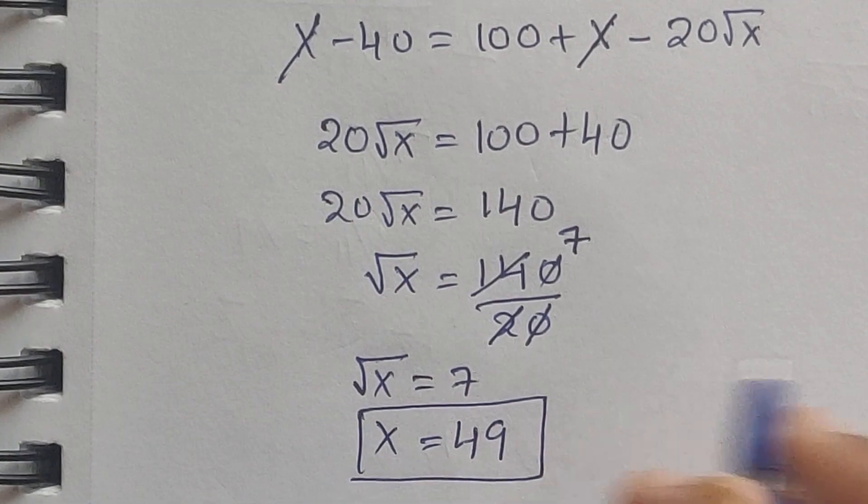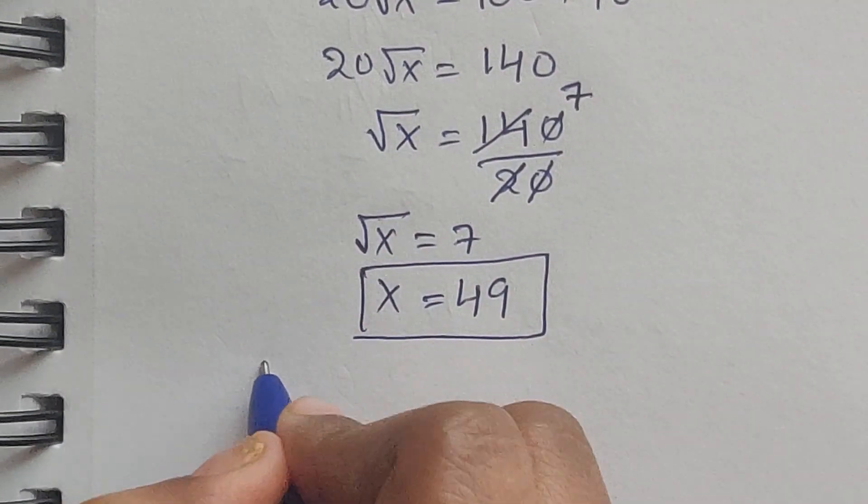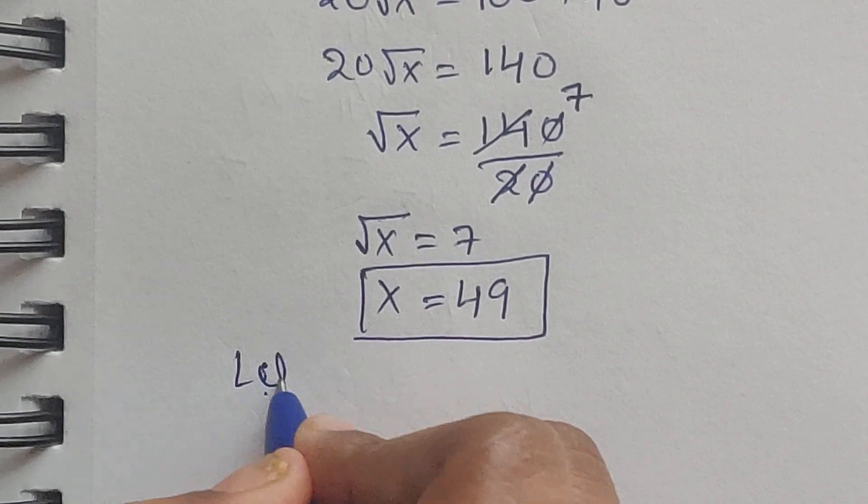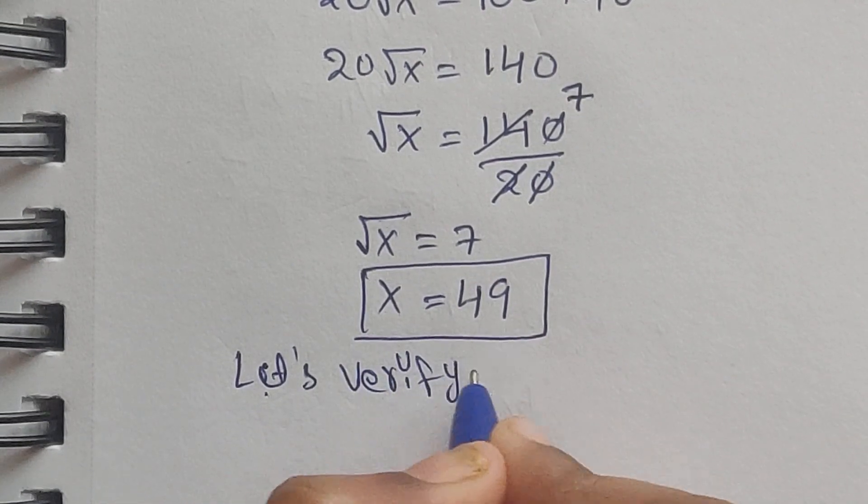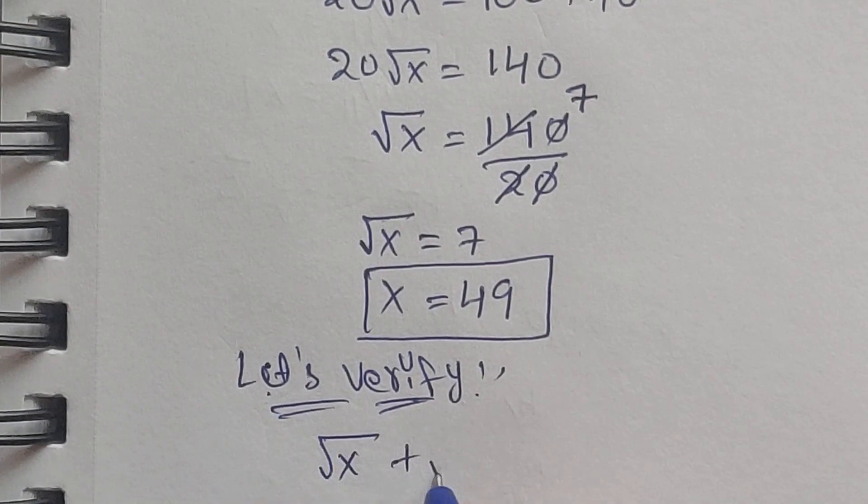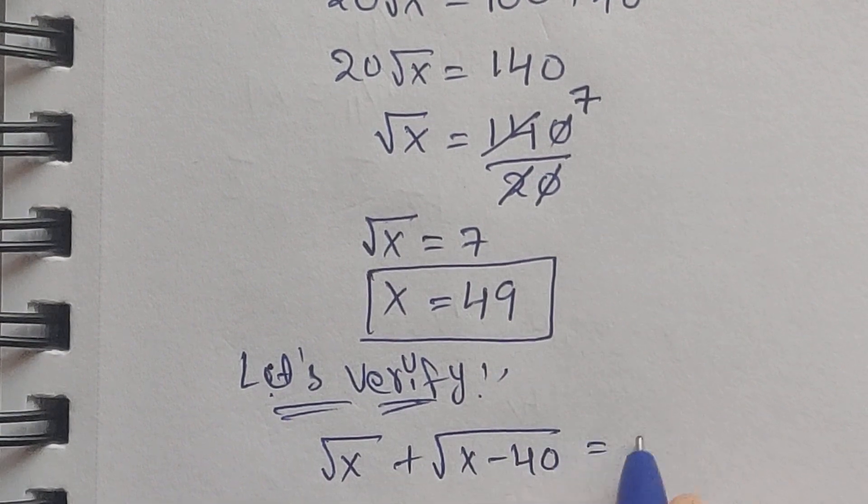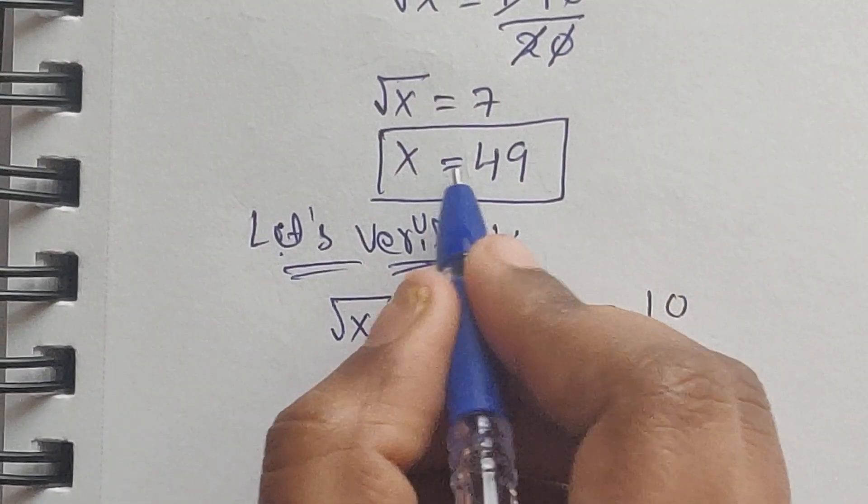So this is the x value. Let's verify. Square root of x plus square root of x minus 40 equal to 10.